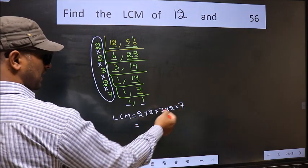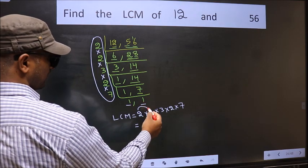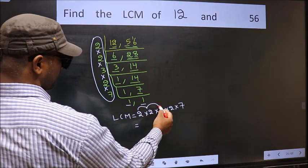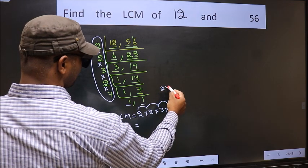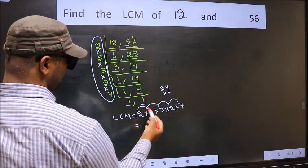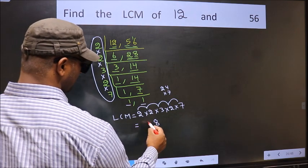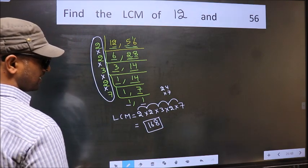So let us multiply these numbers. 2×2 is 4, 4×3 is 12, 12×2 is 24, 24×7. 7×4 is 28. 8, 2, 7, 2, 14 plus 2 is 16. So 168 is our LCM.